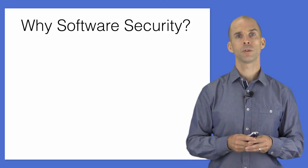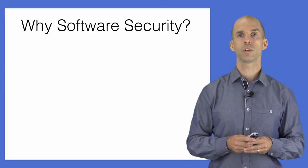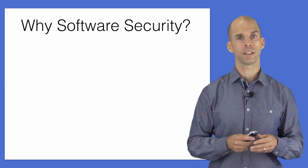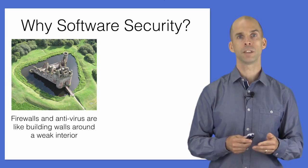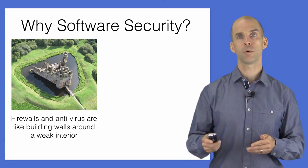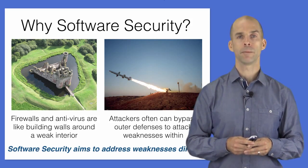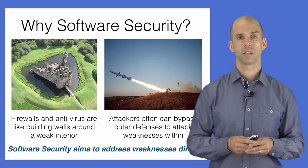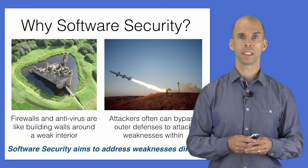Why is software security's focus on code important? Software defects are often the root cause of security problems, and software security aims to address these defects directly. Other forms of security tend to ignore the software and build up defenses around it, just like the walls of a castle. These defenses are important and work up to a point, but when software defects remain, clever attackers often find a way to bypass those walls.